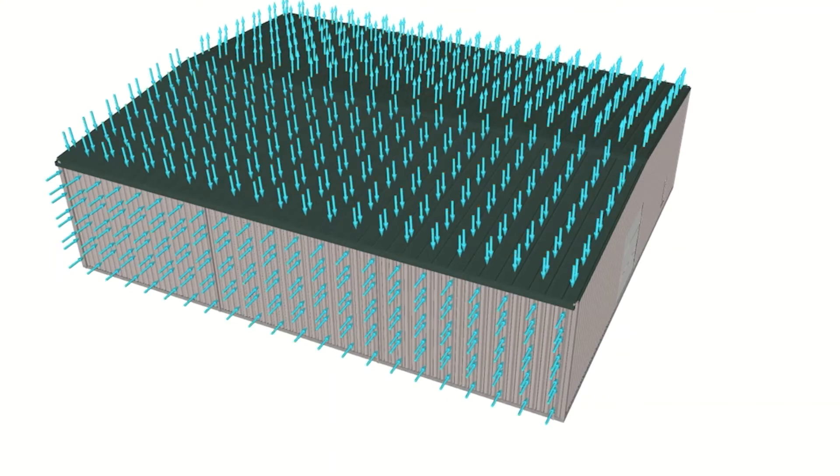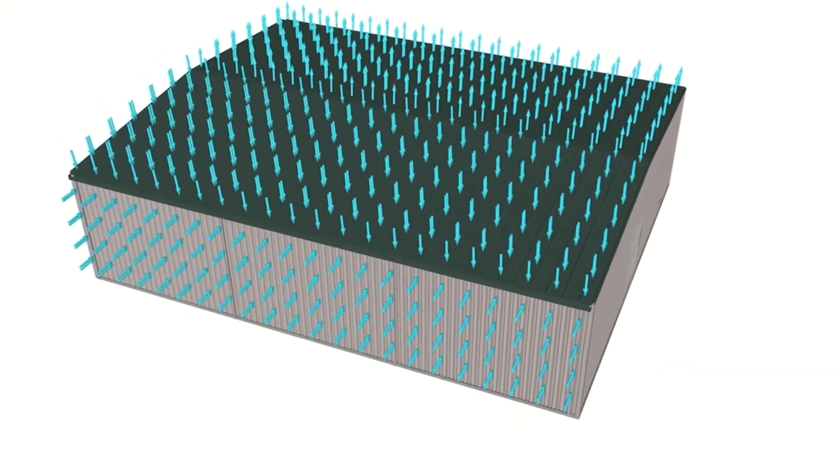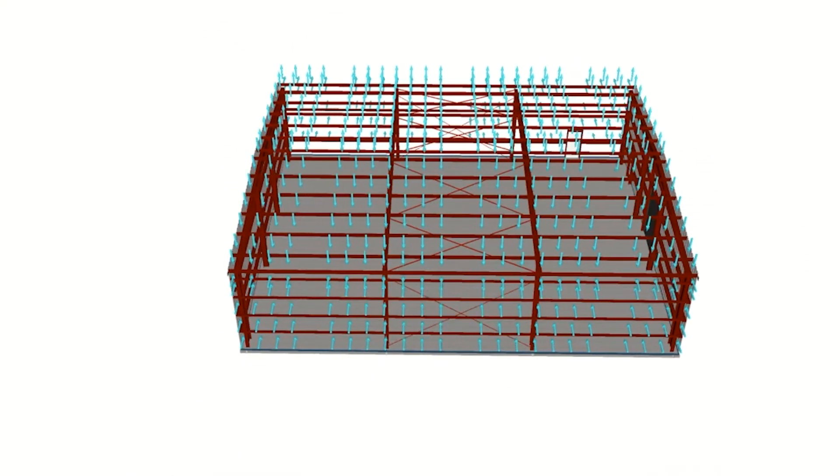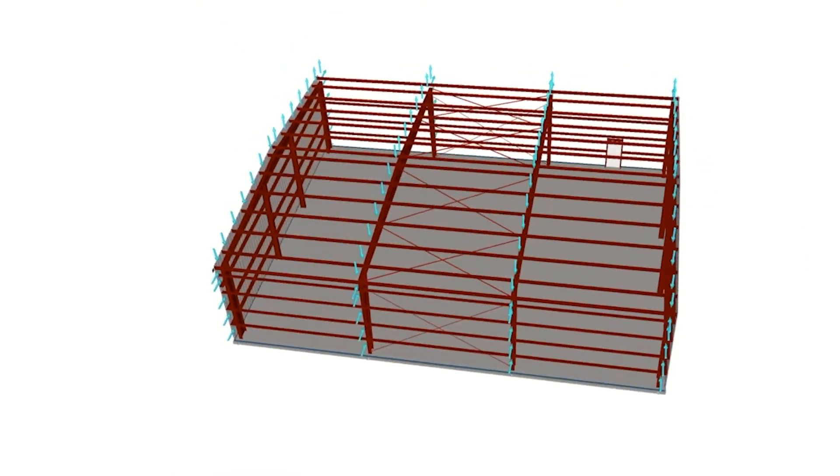The wind pressure is transmitted from the wall and roof cladding to the girts and purlins, respectively. The wind load is then carried by the girts and purlins to the end wall and interior primary rigid framing.